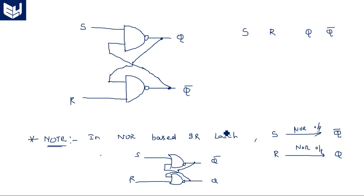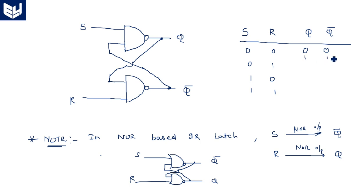Now let us see the truth table. When both inputs S and R are 0, both outputs Q and Q bar are either both 0 or both 1 — this is an invalid state. So the 0,0 state is not considered in the NAND-based SR latch. Whereas in the NOR gate realization, the 1,1 state is not considered — you may remember this from the previous video. The remaining operations are common.